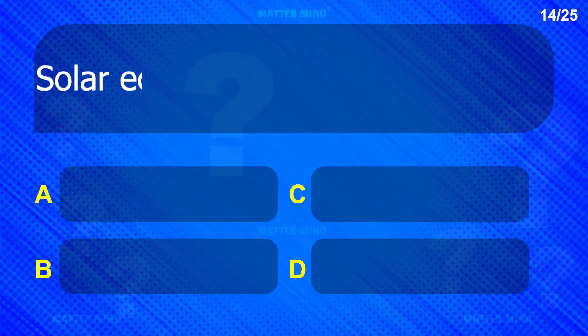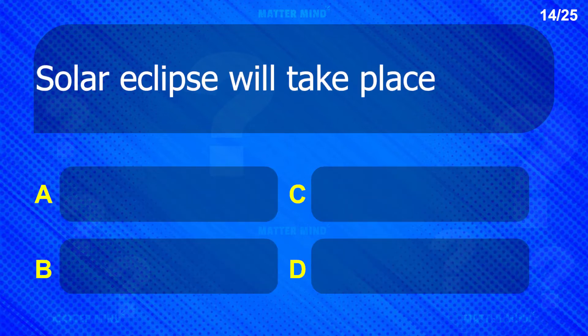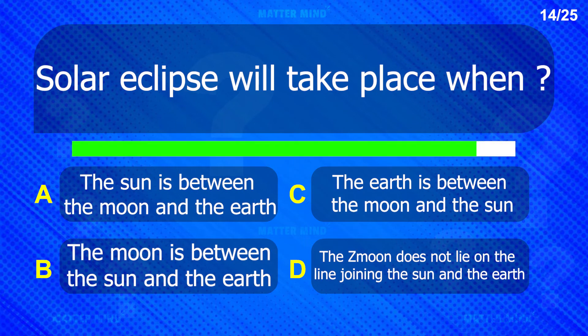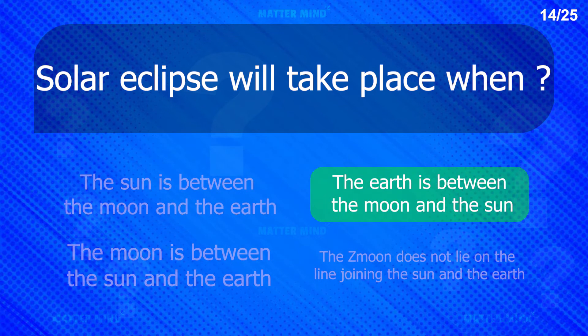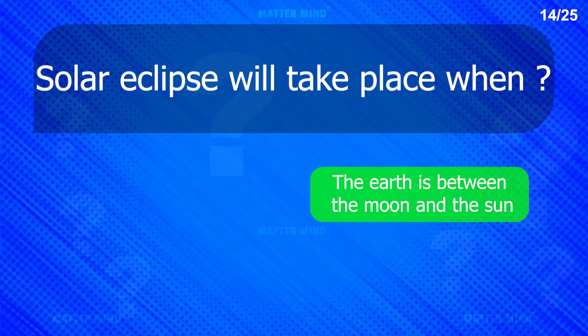Solar eclipse will take place when — The Earth is between the Moon and the Sun.